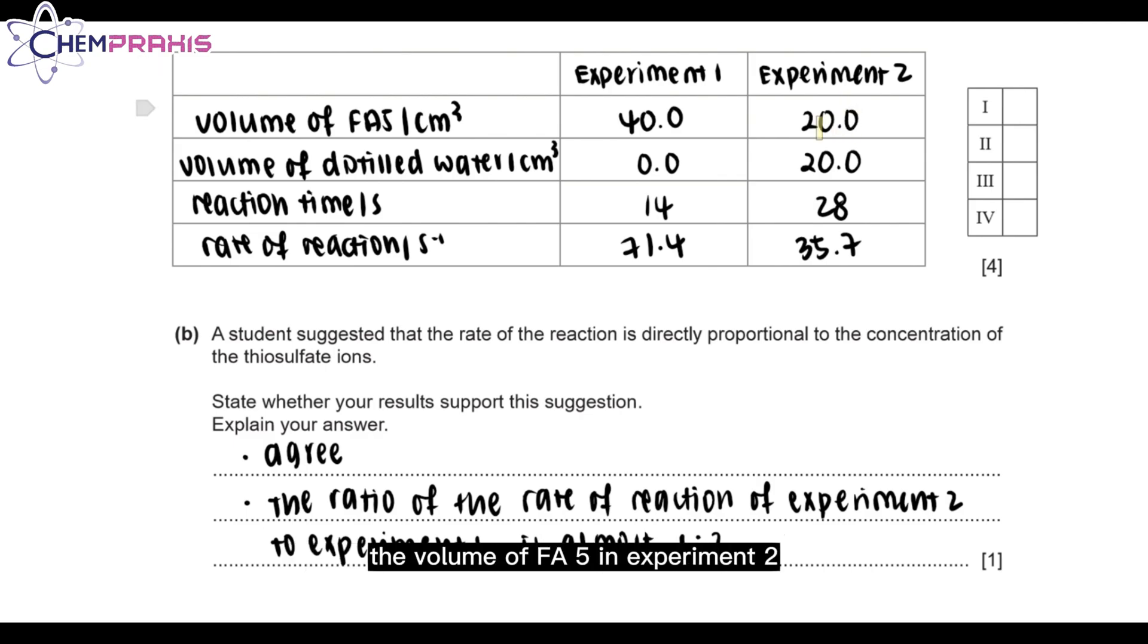If you look at the table, the volume of FA5 in experiment 2 is half of the volume of FA5 in experiment 1. This means that the concentration of FA5 in experiment 1 is double the concentration of experiment 2. Since the concentration is doubled, the rate of reaction of experiment 1 is also 2 times more than the rate of reaction in experiment 2. Therefore, our result supports the statement in part B.